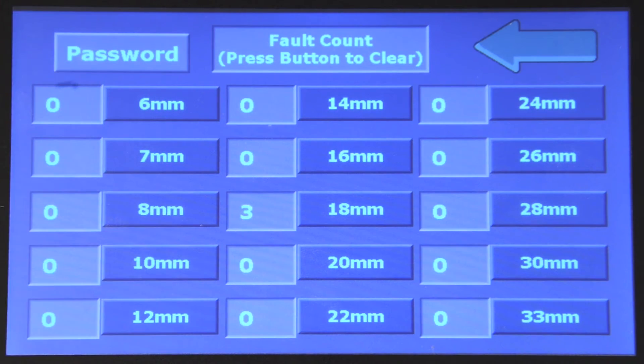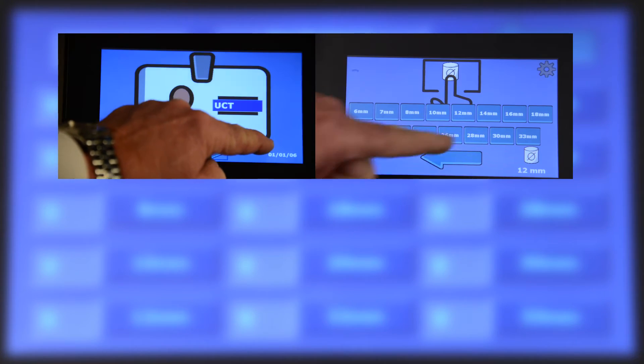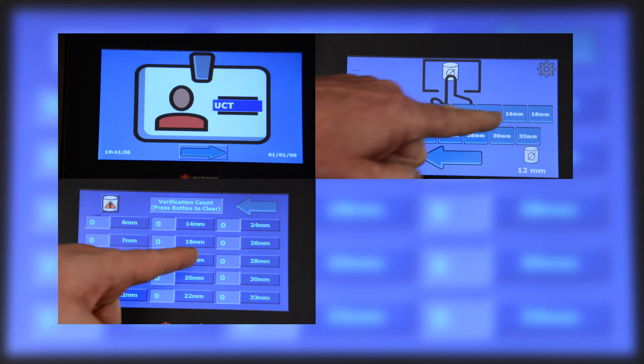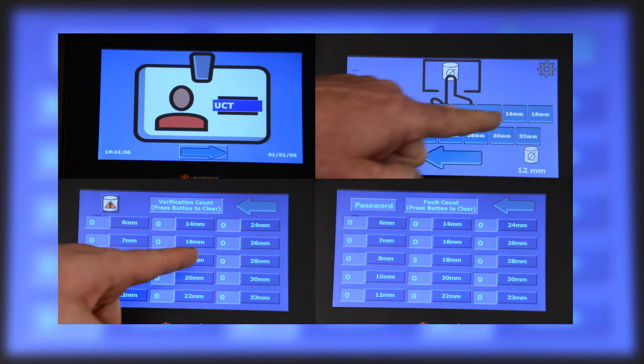Faults can be reset on the second page by pressing the fault reset button and entering the password. All user IDs, projectile sizes, verifications and faults are stored in the PLC for data logging requirements and cannot be reset or erased by the operator.